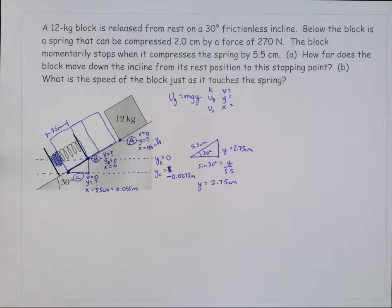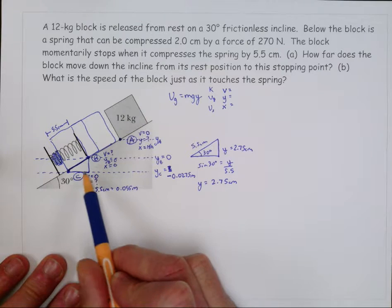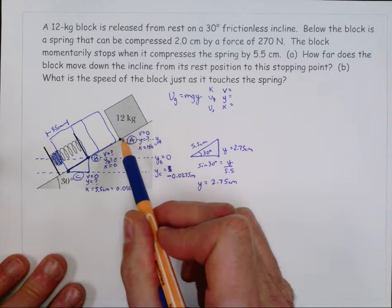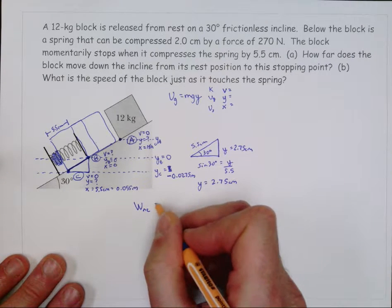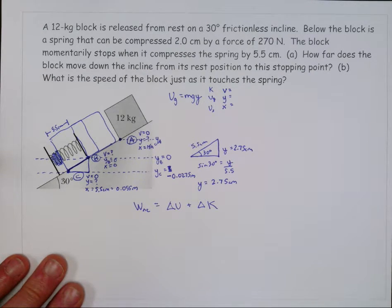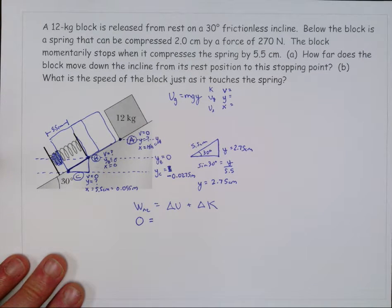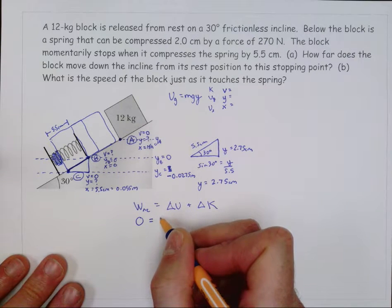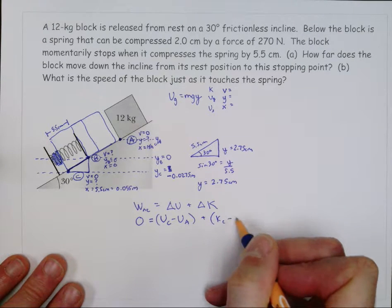Now we have location C where we know everything — that's one location I'll use. The other is location A, since that's what we're looking for. The equation is WNC = ΔU + ΔK. WNC is work done by non-conservative forces like friction or a person pushing. Gravity and springs are conservative forces. There's no friction and no person pushing, so WNC equals zero. I'm comparing C to A — final minus initial: potential at C minus potential at A, plus kinetic at C minus kinetic at A.